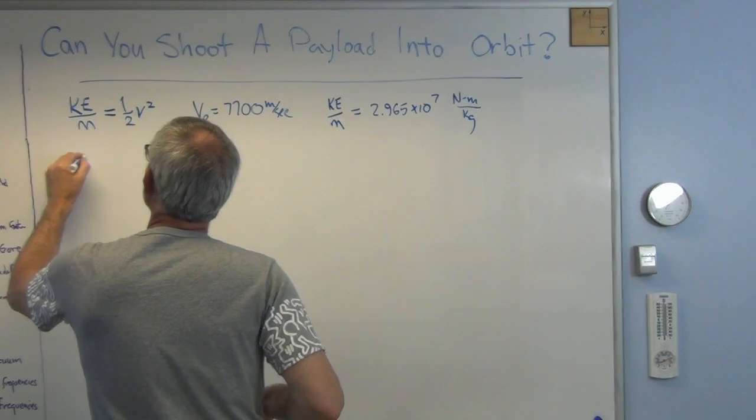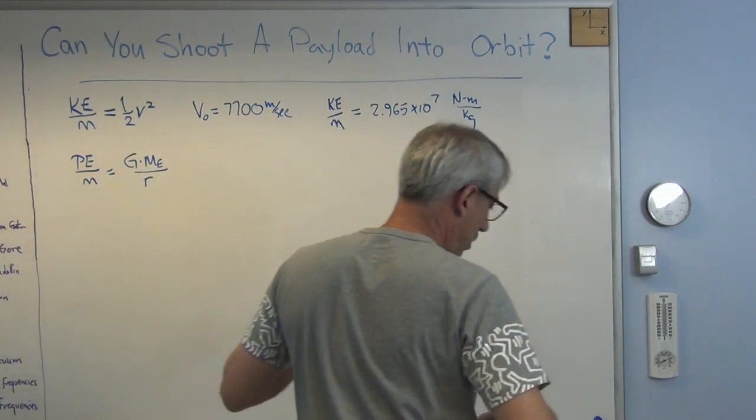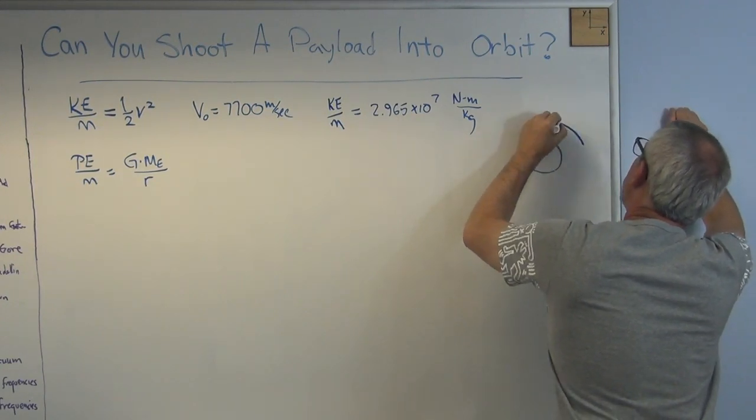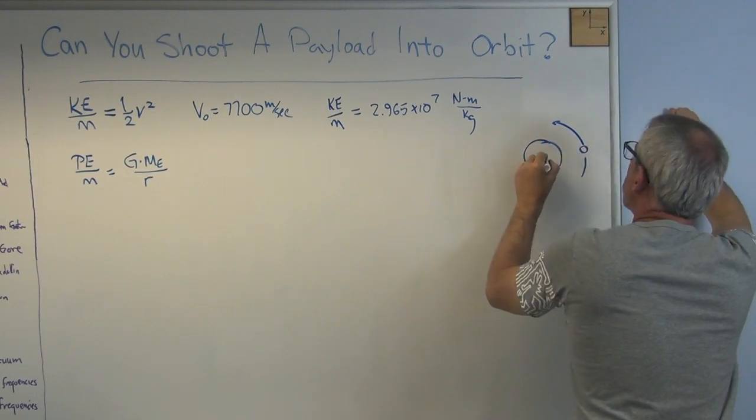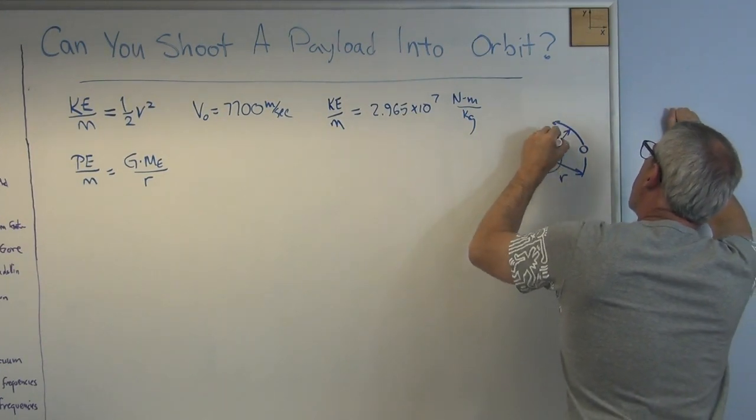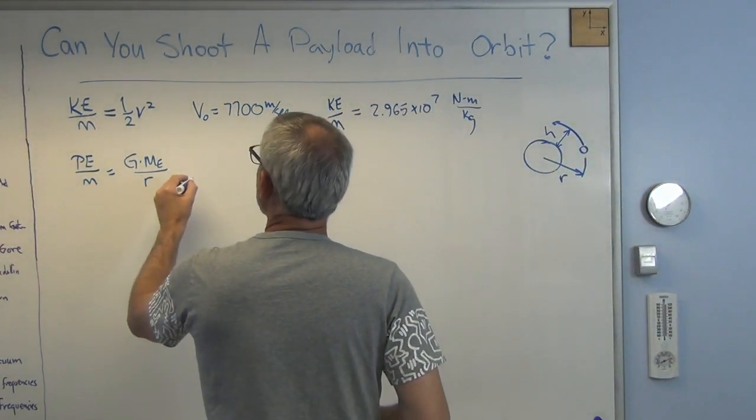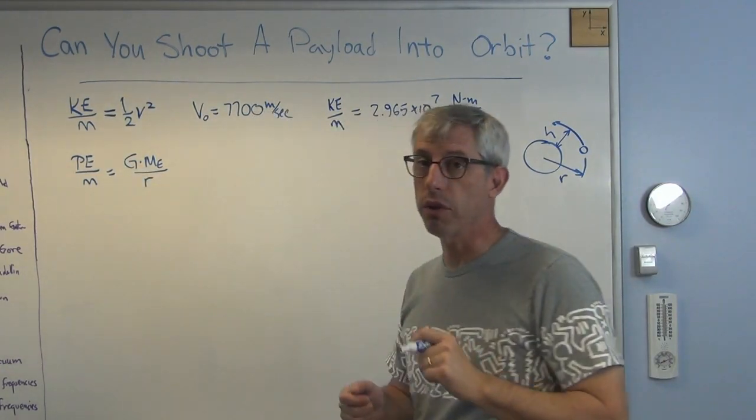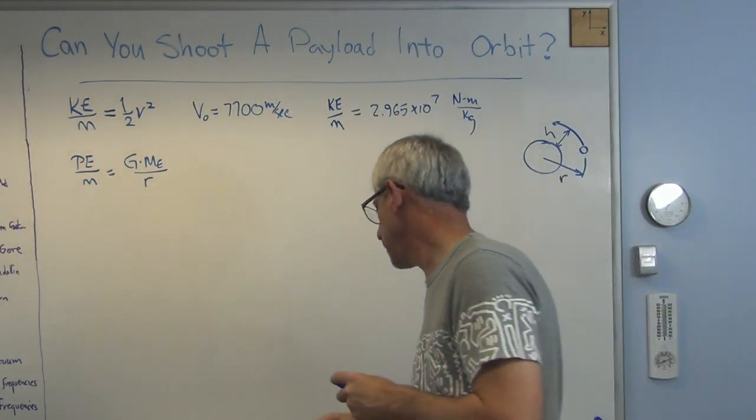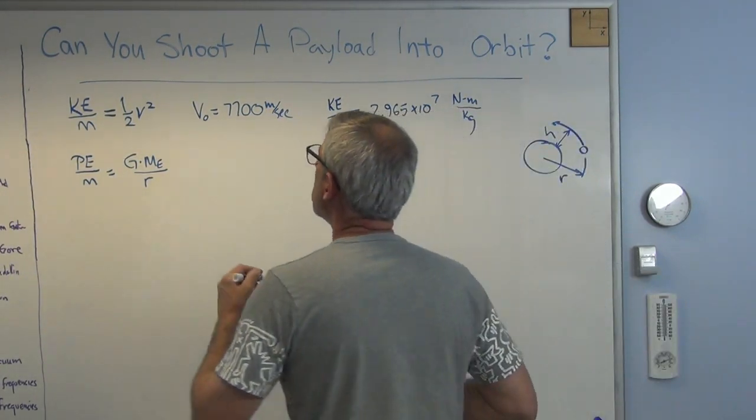Now the other one, I want a potential energy per unit mass is G times the mass of the Earth over R, where R is the radius of the orbit. So if this is the Earth, and you're in orbit around it here, there's this path around the Earth. That's R. That is H, that's the height of the orbit, which for us is 400 kilometers. G is the universal gravitational constant, not the acceleration of gravity. That is 6.6741 times 10 to the minus 11 meters cubed per kilogram second squared.